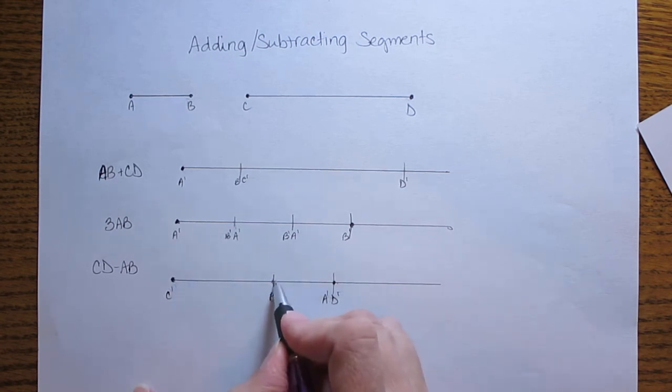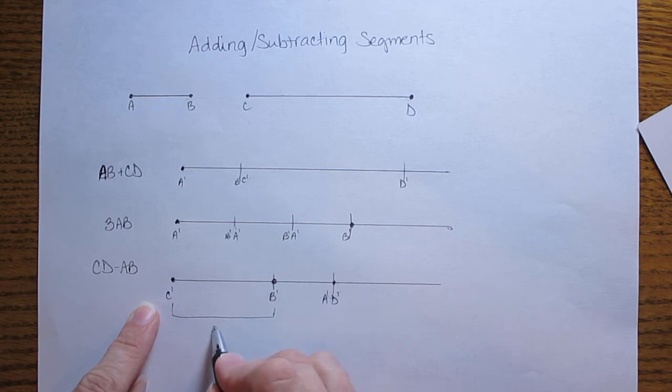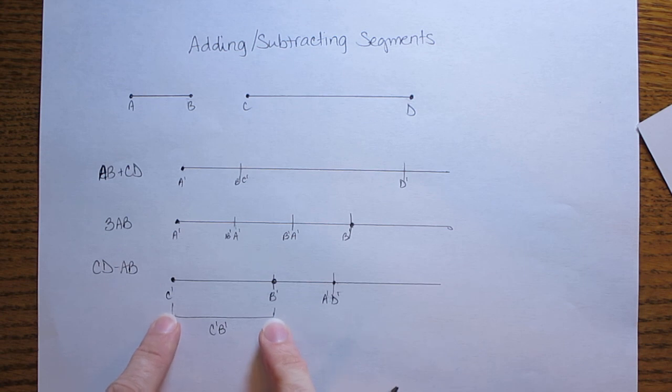So the final subtraction problem ends with this is the subtracted segment that we're looking for. When we take CD minus AB we get C prime B prime this segment right here.